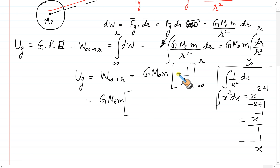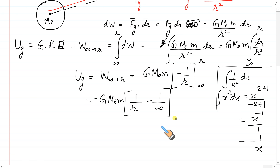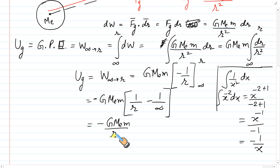Applying limits: [−1/r] from infinity to r = (−1/r) − (−1/∞). Since 1/∞ = 0, this gives −1/r. So gravitational potential energy = −G·Me·m / r.